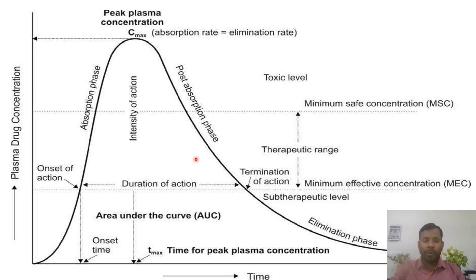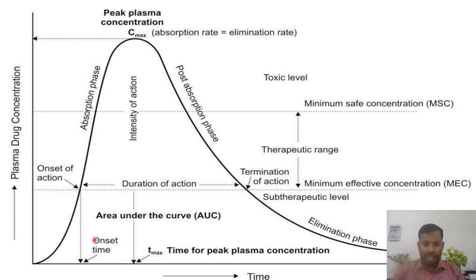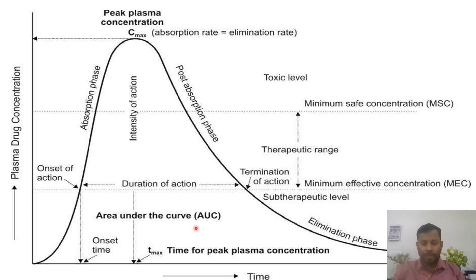As I told, there are three pharmacokinetic parameters. Here, this is Cmax. Second, here it is Tmax. Then this is the area under the curve — total area AUC. This area under this curve is called AUC, or area under the curve.